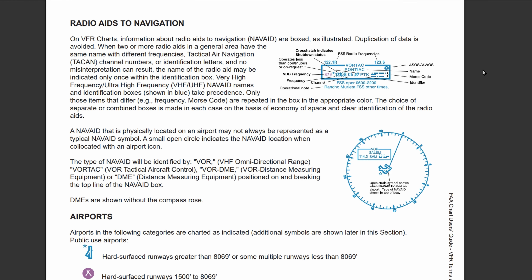In this section, subsection 2, we're looking at radio aids to navigation. On our VFR chart, which is the overall section that we're looking at, we have our radio aids to navigation. These are also known as nav aids, or NAVAID — navigational aids.